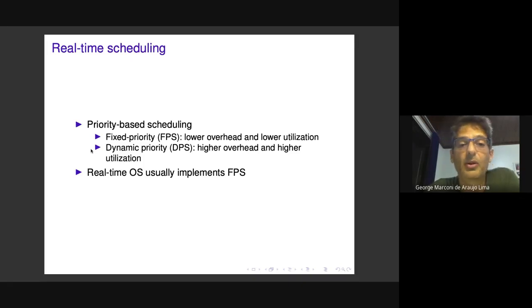Dynamic scheduling requires higher overhead because we must manage dynamic priority queues, reorganizing task queues. It requires more resources for scheduling compared to fixed priority, but allows higher system utilization.